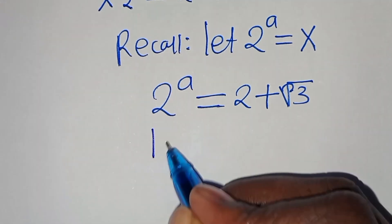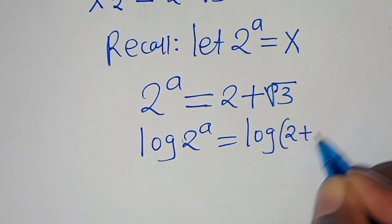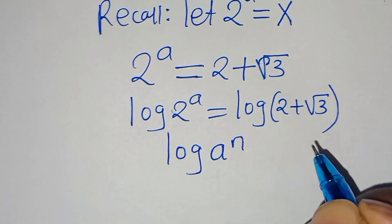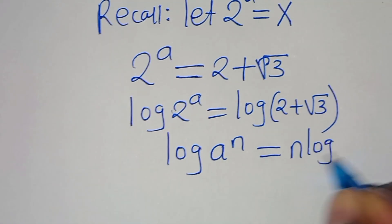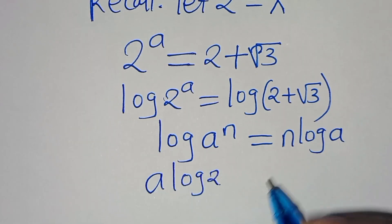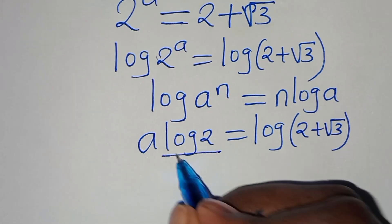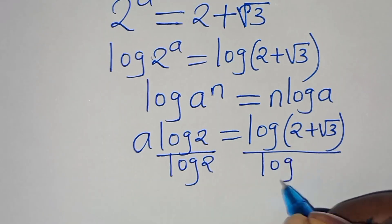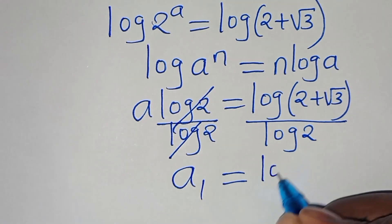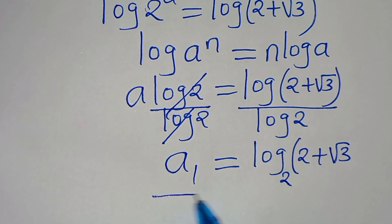To solve for A, we introduce logarithm on both sides, so we have log of 2 to the power of A equals log of 2 plus square root of 3. Now, log of 2 to the power of A can be expressed using the power rule as A log 2. Applying this power rule property, A log 2 is equal to log of 2 plus square root of 3. Dividing both sides by log 2, we have that A1 is equal to log base 2 of (2 plus square root of 3).